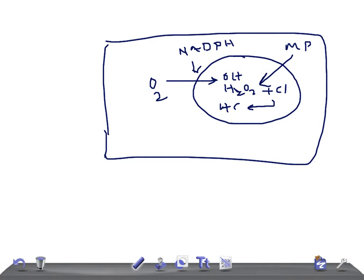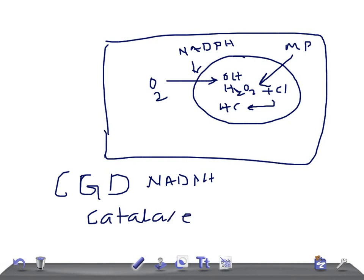An example of a defect in this pathway is Chronic Granulomatous Disease (CGD), where there is a deficiency of NADPH oxidase, leading to recurrent infections. Two important categories of bacteria here are catalase-positive organisms — such as Staphylococcus aureus, Staphylococcus epidermidis, Klebsiella, Serratia, Aspergillus, and Candida — and catalase-negative organisms.